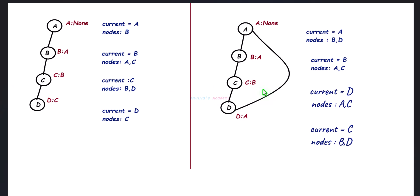Now consider this second graph — it is a cyclic graph. You can see there is a cycle. I will take a as the starting node. Insert a into the queue; adjacent nodes are b and d — not visited, so visit them and add to the queue. Next remove b from the queue; its adjacent nodes are a and c. A is already visited — check whether a is the parent node of b — true.